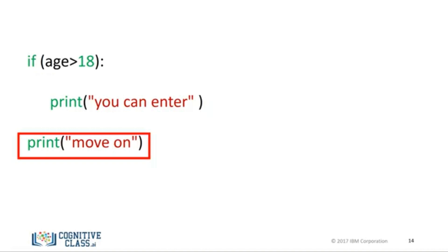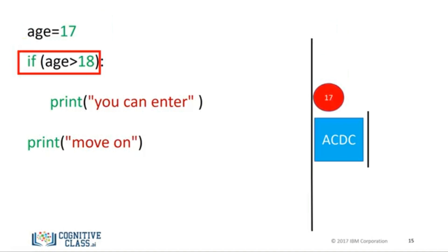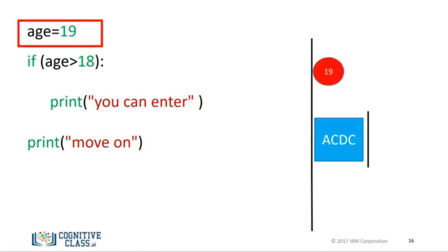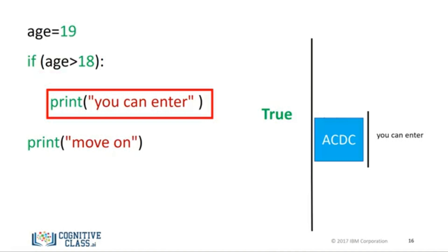For the case where the age is 17, we set the value of the variable age to 17. We check the if statement. The statement is false. Therefore, the program will not execute the statement to print 'you will enter'. In this case, it will just print 'move on'. For the case where the age is 19, we set the value of the variable age to 19. We check the if statement. The statement is true. Therefore, the program will execute the statement to print 'you will enter'. Then it will just print 'move on'.